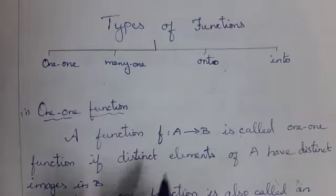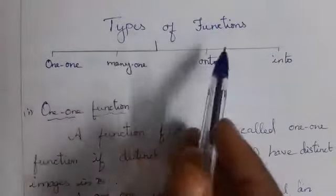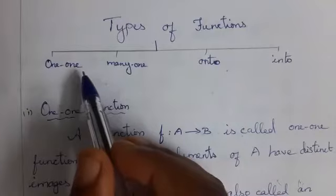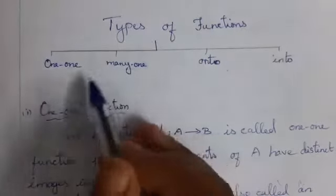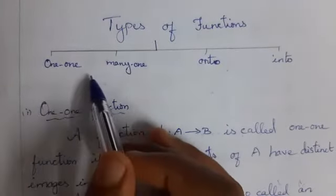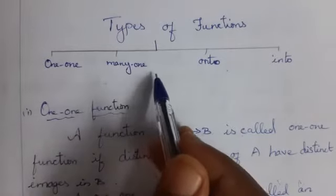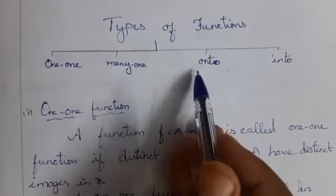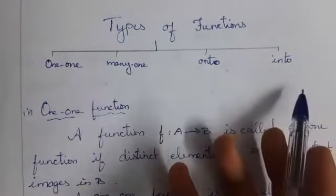Hello students. Now you can see the types of functions. For a function, you have four types: one-one function, many-one function, onto function, and into function.